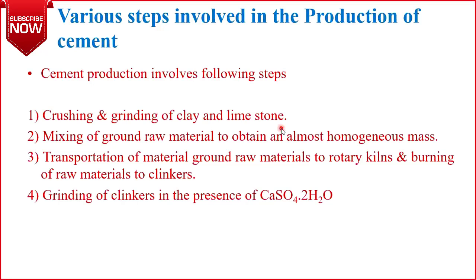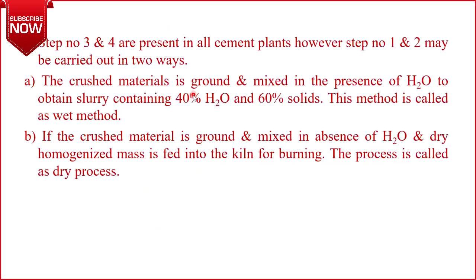After size reduction, we mix the raw materials to form a homogeneous mass in the correct ratio to achieve the desired cement composition. Then we transfer this homogeneous mixture of raw materials into the reactor — known as the rotary kiln — where we heat it at very high temperature to produce clinkers. In the final step, we grind the clinkers and mix gypsum into them, and after these steps we have cement.